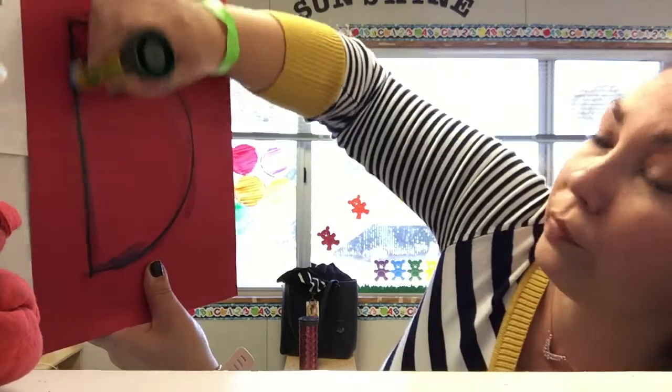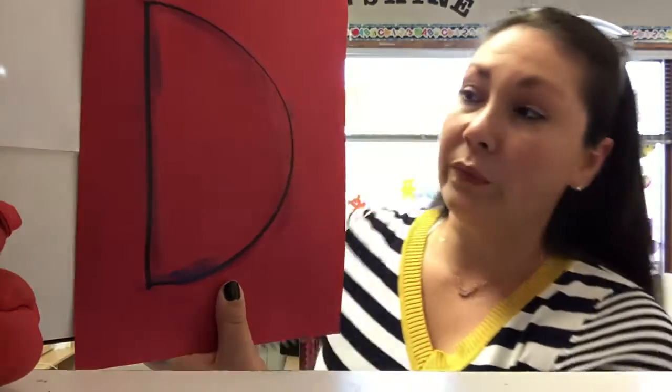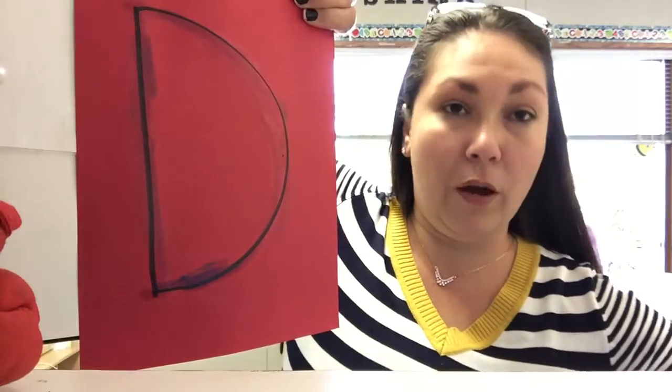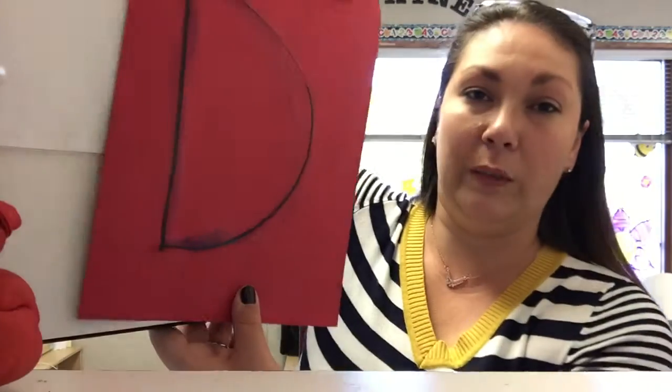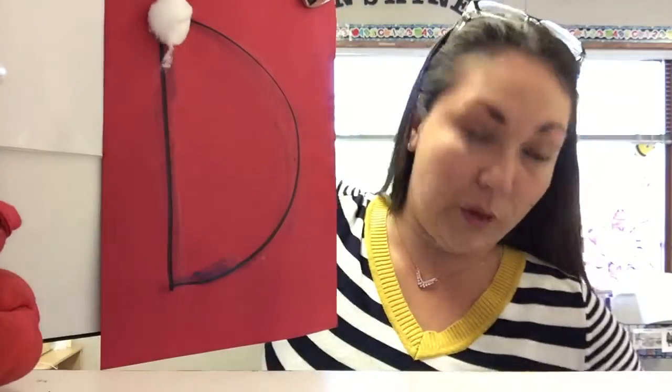That's all I'm going to do. Trace the letter D with my glue, and then I'm going to get my cotton balls. I'm going to open those. And then I'm going to use my bag of cotton balls to make my letter D. So let me show you. There's my letter D. I'm going to put my cotton balls on there.